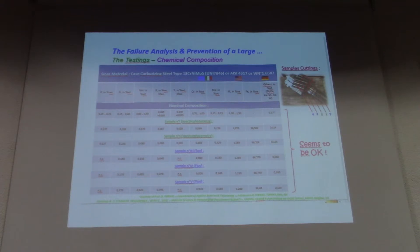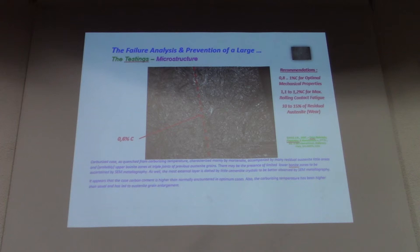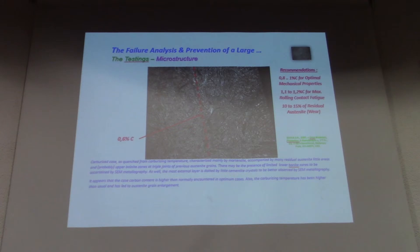The problem is in the carburizing, and here is what we found by optical microscopy of the edge. Here is the distance at which we measured a 0.6% carbon value. By optical microscopy we were able to detect martensite — without confirming yet whether it is tempered martensite — some residual austenite, and some upper bainite at triple joints, further to be assessed by SEM microstructural analysis.